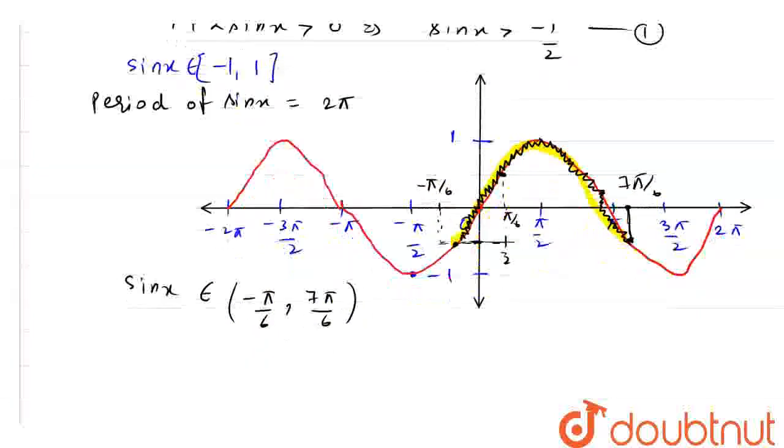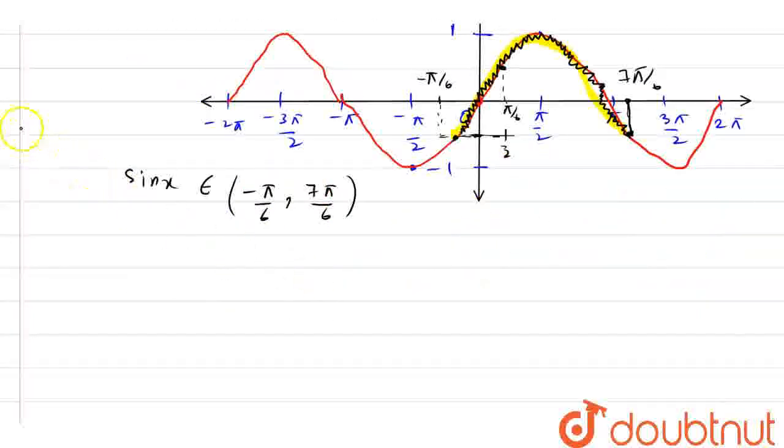This is the value of x, not sin x here. So x belongs to minus π by 6 to 7π by 6. And I can write it as x belongs to minus π by 6 to 7π by 6 also.